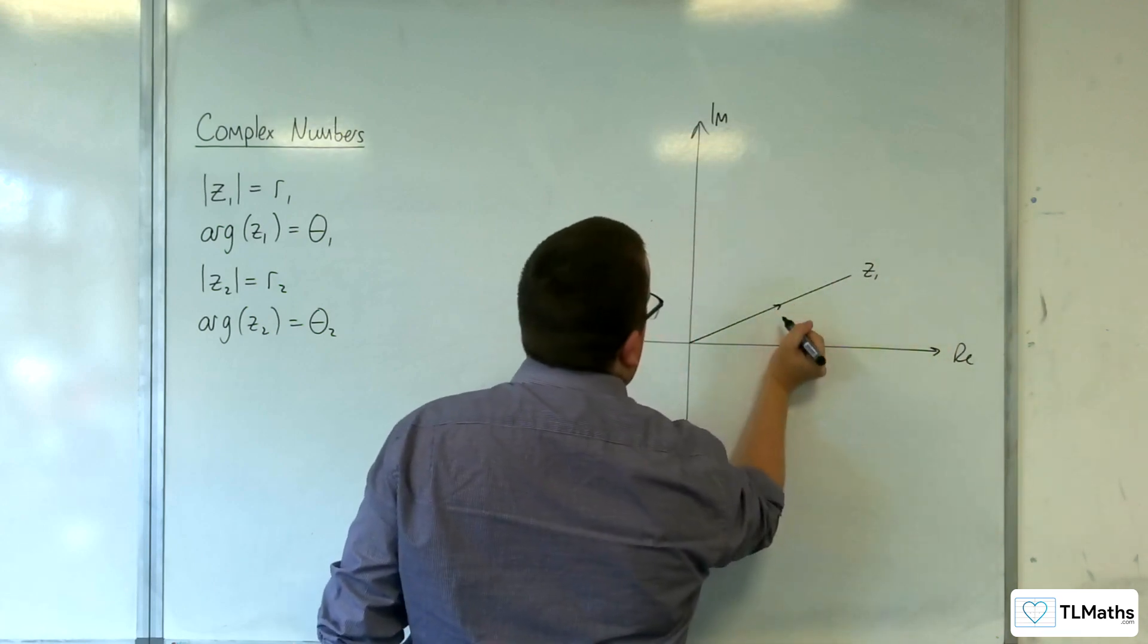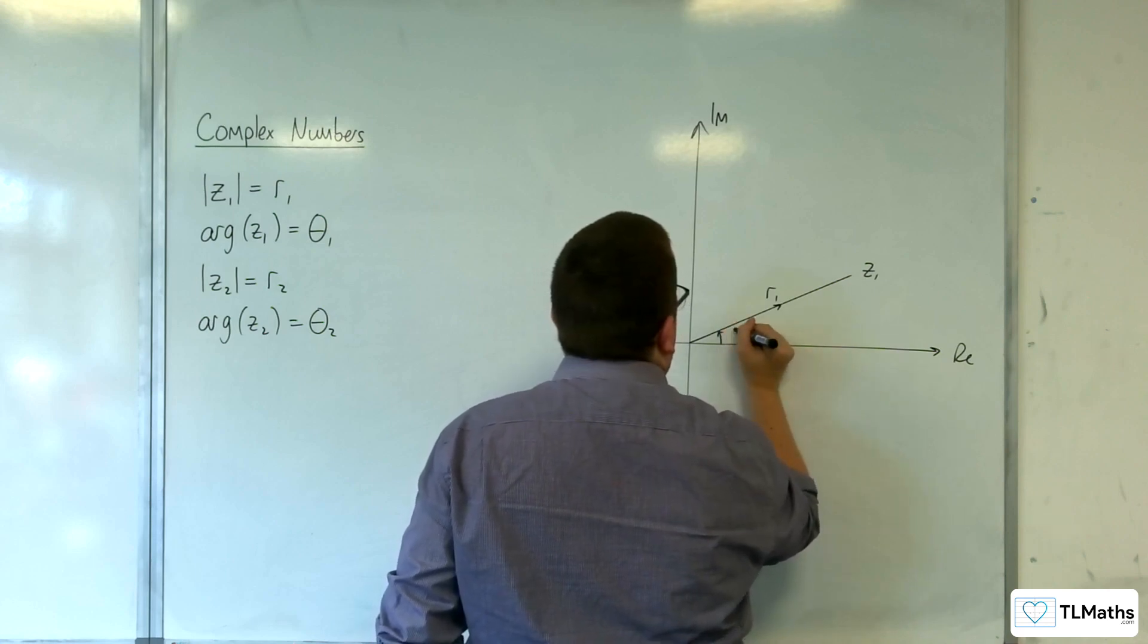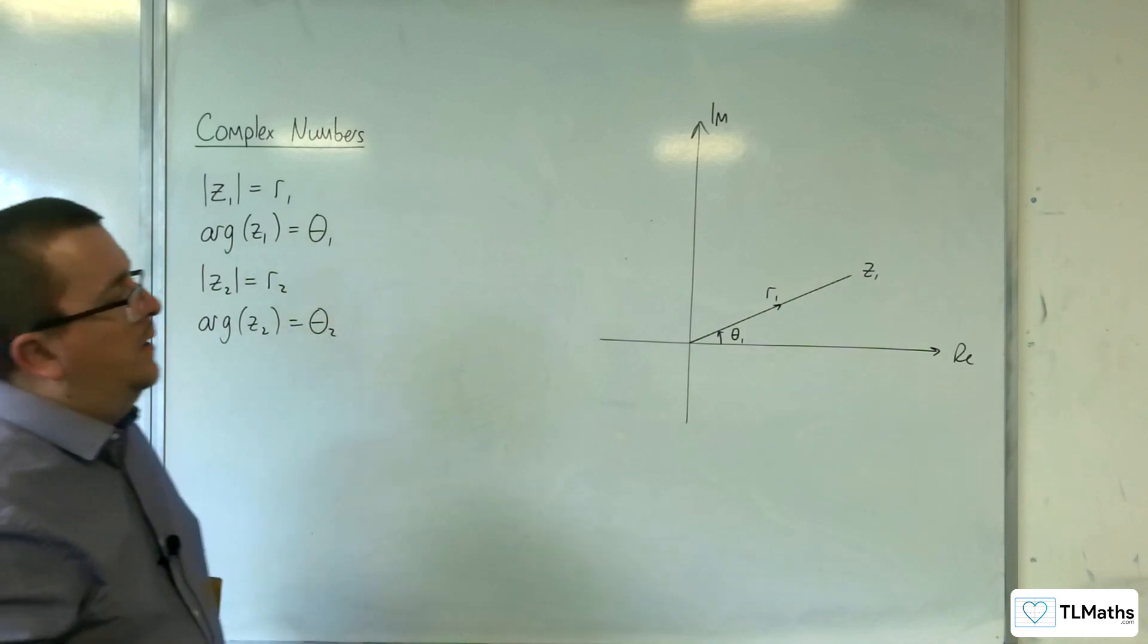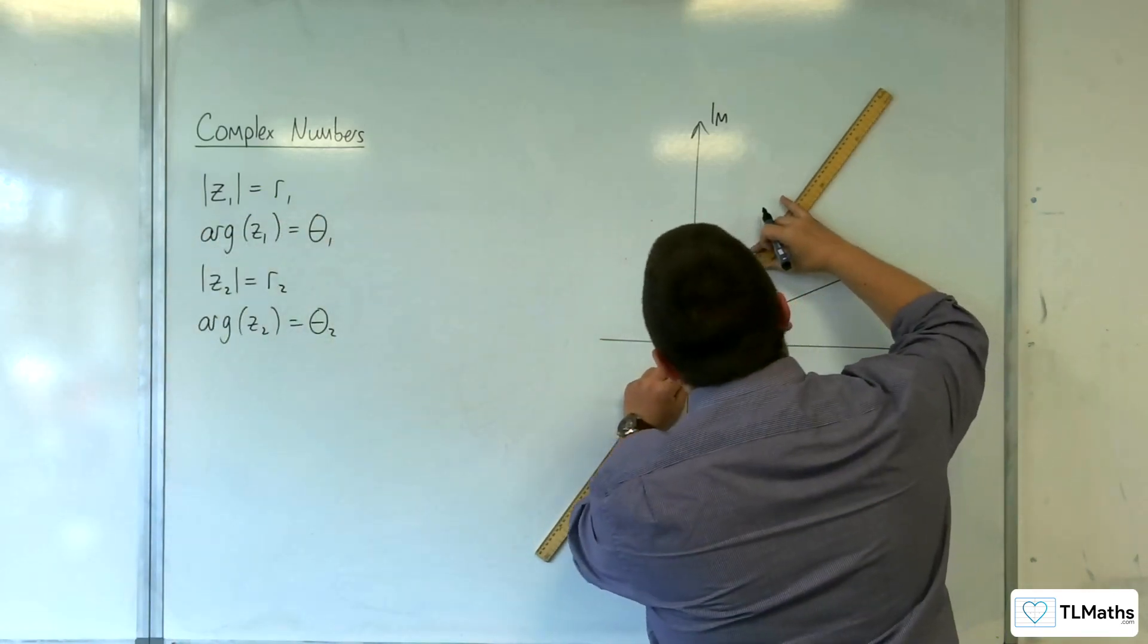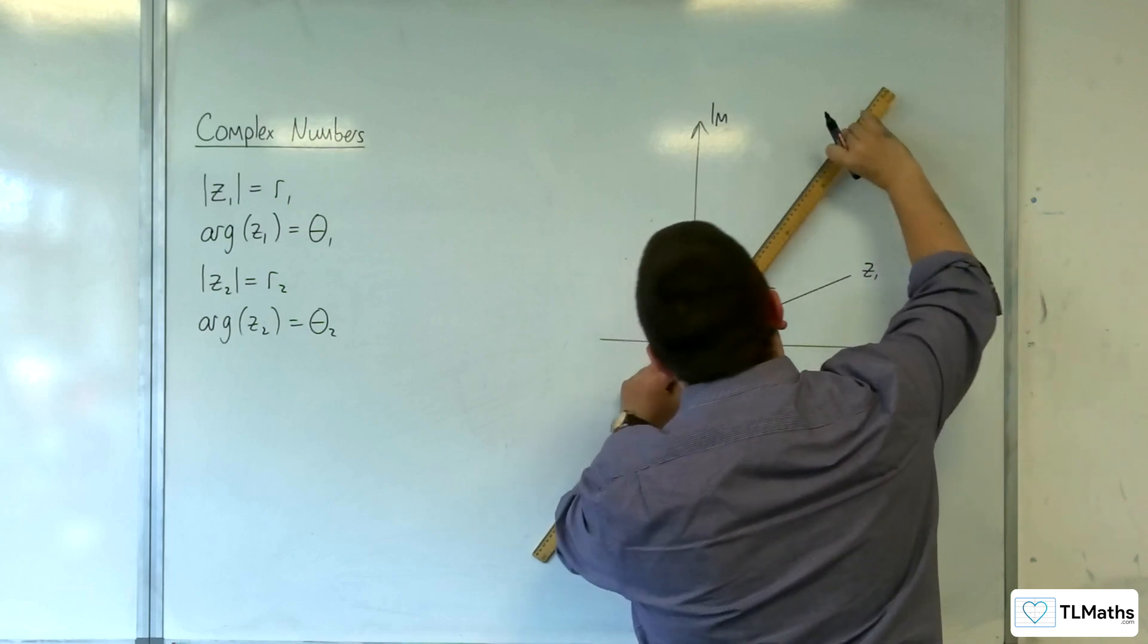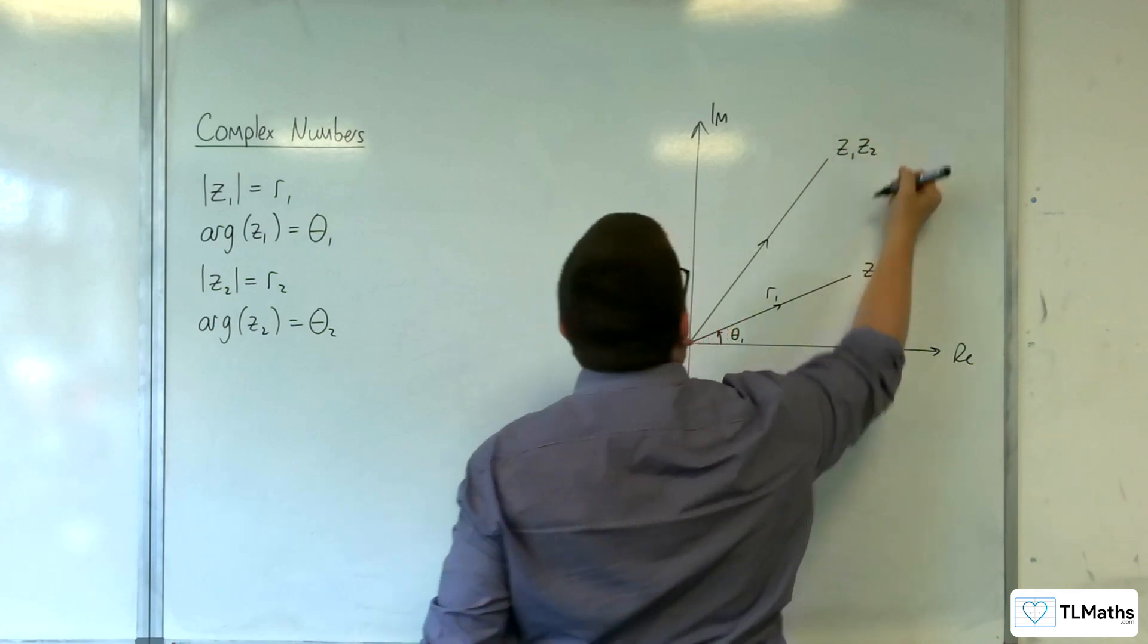It's got its length R1 and its argument theta 1. Now if I draw Z1 times Z2, this is Z1 times Z2.